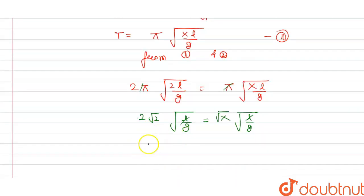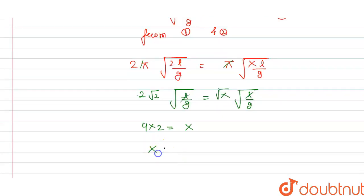Squaring both sides, 2² is 4, (√2)² is 2, and (√x)² is x. So 4 × 2 = x, which gives us x = 8. This is the answer to the question. Thank you.